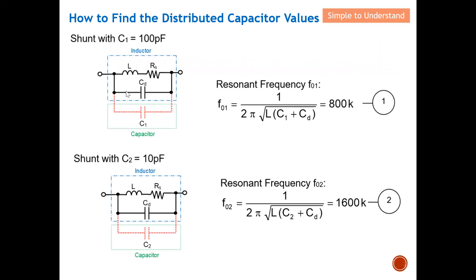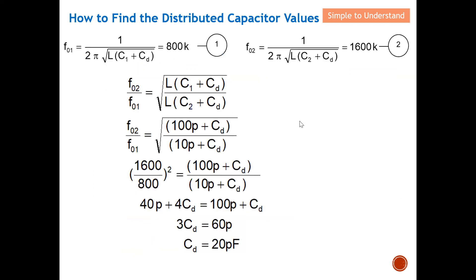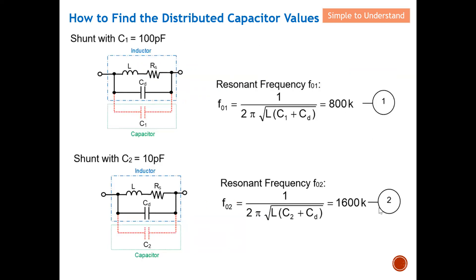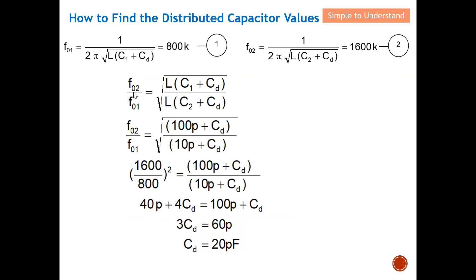From here, I actually obtain two equations. When I put a capacitor of 100 picofarads in parallel with the inductor, I obtain equation one with a sub-resonant frequency of 800 kHz. When I change the capacitor value to 10 picofarads, I obtain another sub-resonant frequency — a higher sub-resonant frequency — giving equation two at 1600 kHz. What I need to do is basically use equation two divided by equation one. From here, we can re-arrange all the formulas, and these two pi terms cancel each other.